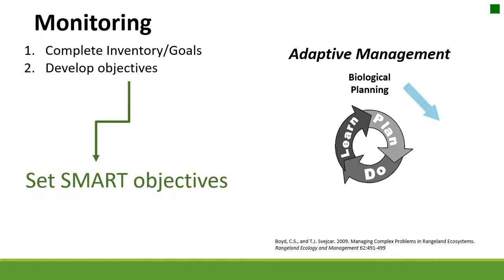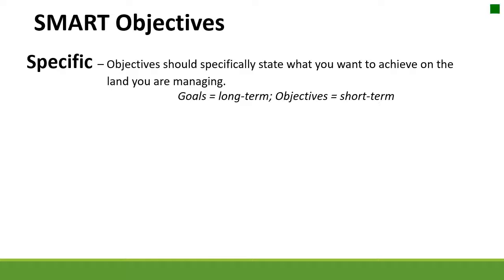The next step is developing objectives, and we're going to go through how to set SMART objectives on the rangeland. The S in SMART refers to specific — make sure your objectives specifically state what you want to achieve on the land. Goals and objectives are often confused: goals are more long term and objectives are more short term. For example, a goal might be to maintain a sustainable operation, while the objective would be to maintain a perennial bunch grass stand that minimizes erosion.